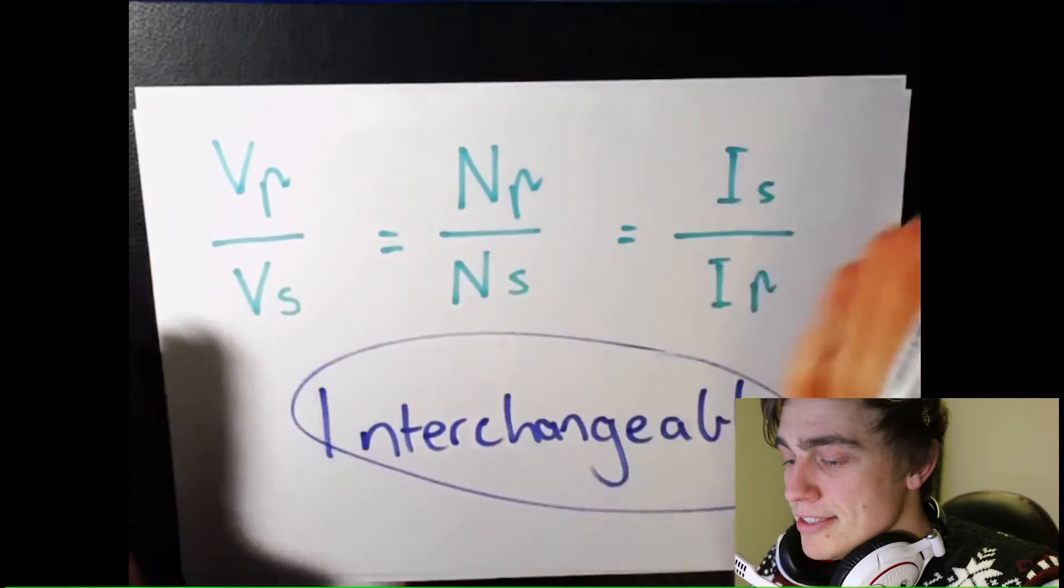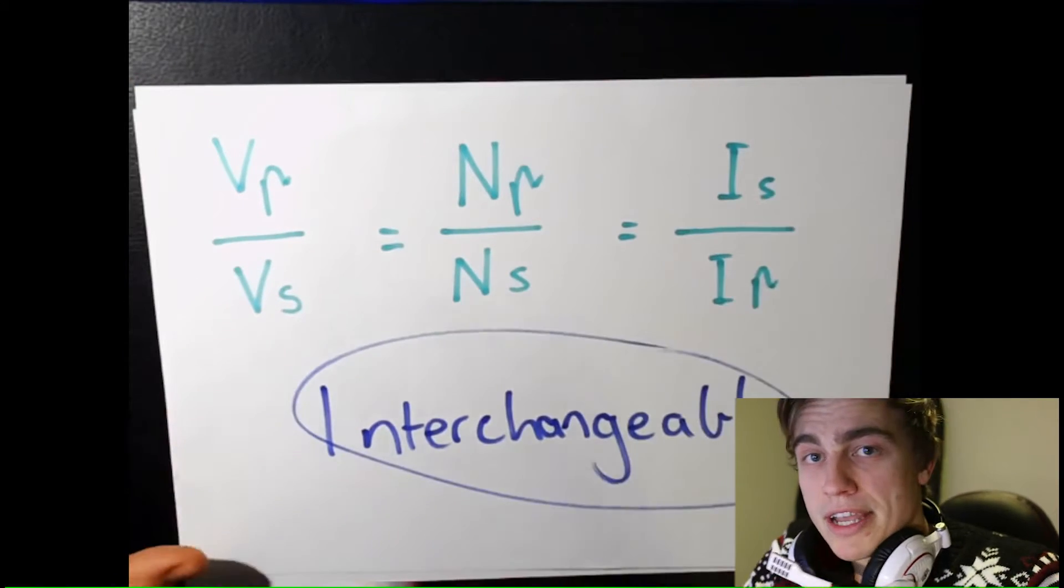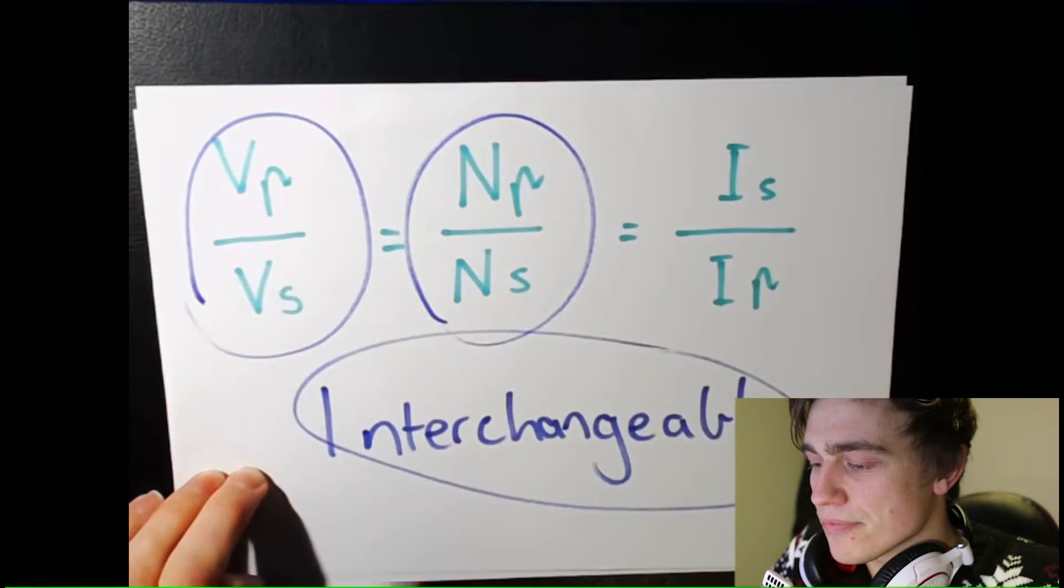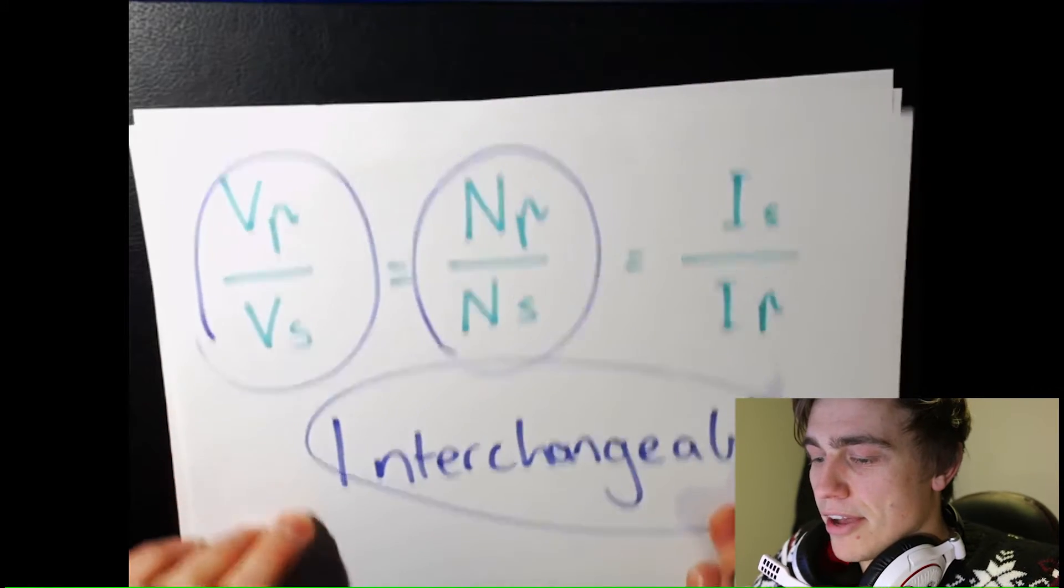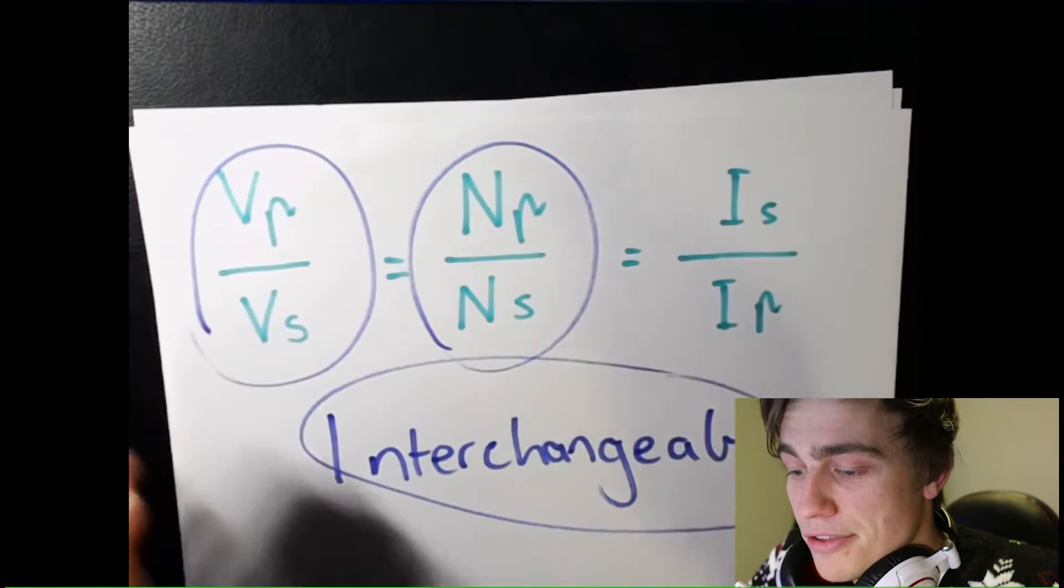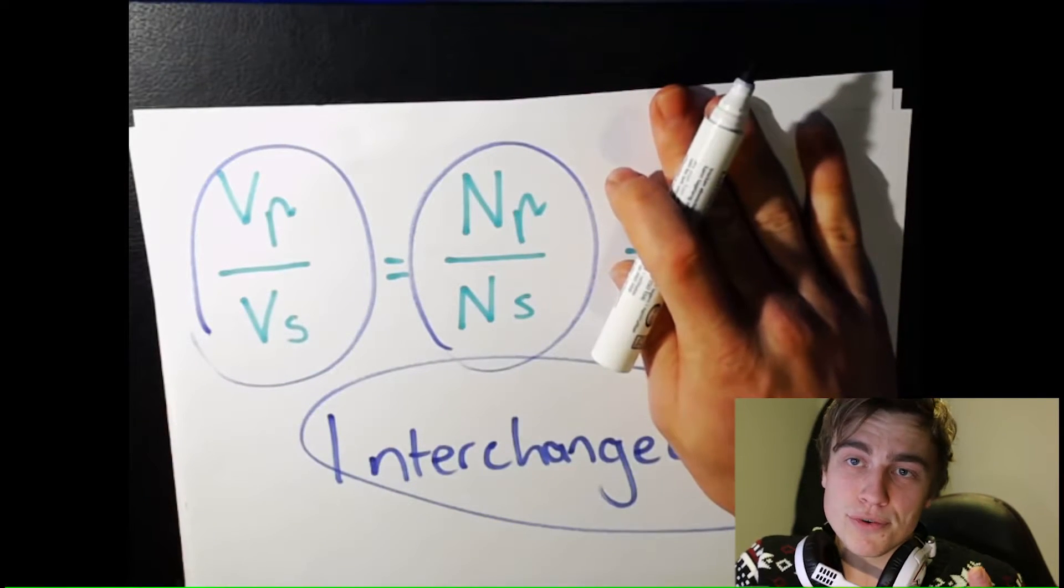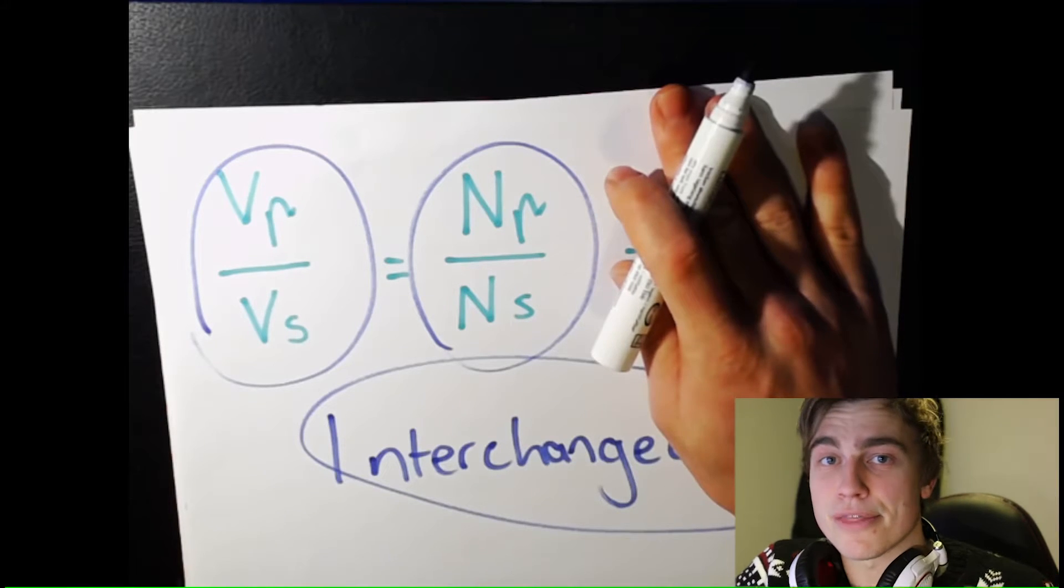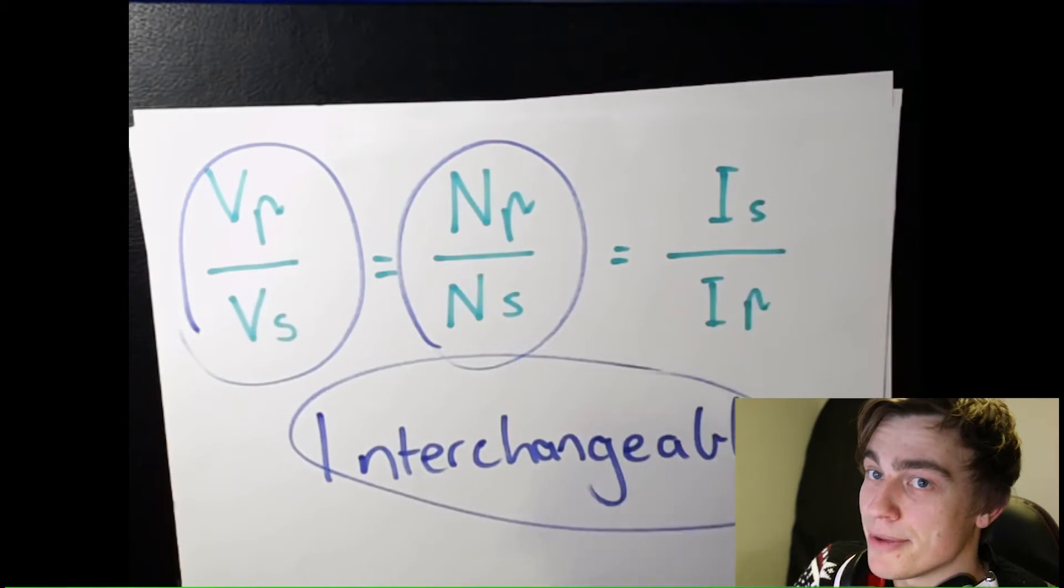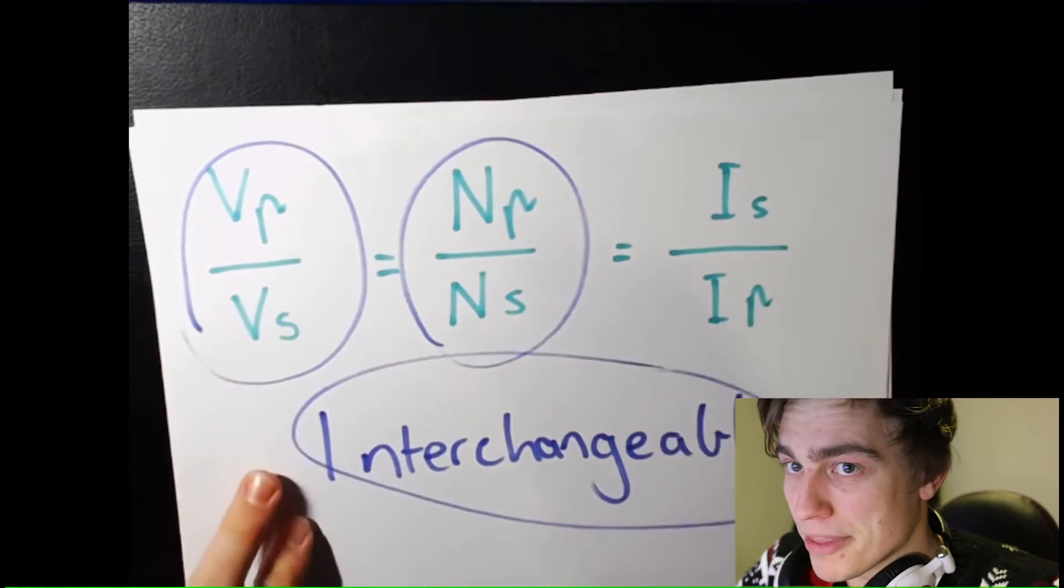Okay, so we've got three different factors. Basically, for example, I could choose any of these two and leave out that. You have three of these factors, you get the fourth. Just like Ohm's law: if you have two of the factors, you can get the third. For example, if I have volts and amps, then I can get my resistance. If I have my resistance and my amps, I can get my volts. Easy. Here, I need three factors to get the fourth. Remember that.